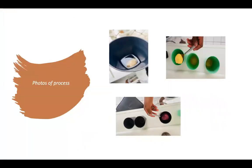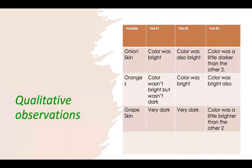Here are the photos of my process. Here are my qualitative observations. For the onion skin, which was one of the ingredients that I used for the dyes: the first trial, the color was bright. The second trial, the color was also bright. But for the third trial, the color was a little darker than the other two.